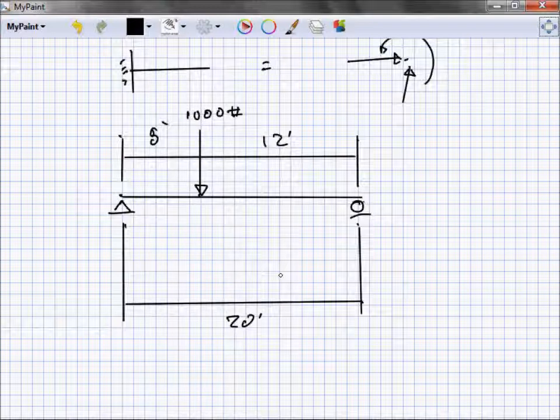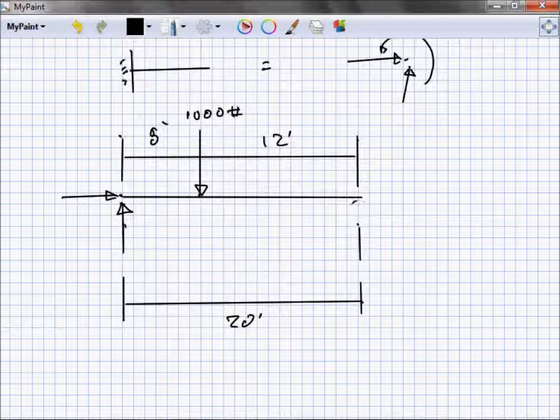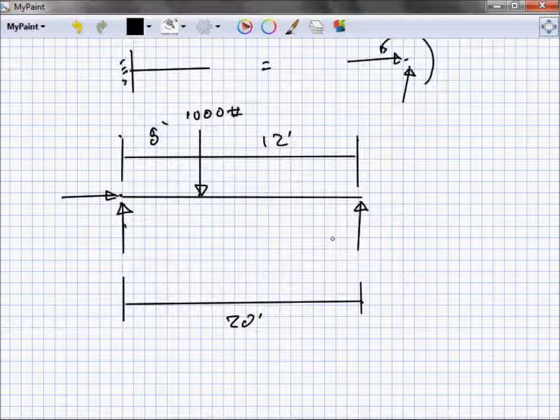What's the first thing we want to do? Always free the body. Free it. Get these little supports out of here. I know that's a hinge, so I'm going to replace it with that load and this load. And I know this is a roller so I'm going to replace it with just one.